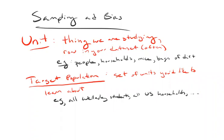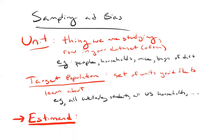Now we've got the most important concept so far — one of the most important concepts in the course. The parameter is a number. It's a number that we wish we knew. In fact, the fact that we don't know the parameter is the whole problem. The parameter is the number that we wish we knew in order to answer the research question.